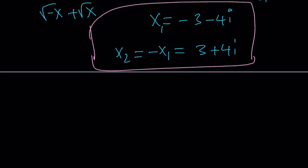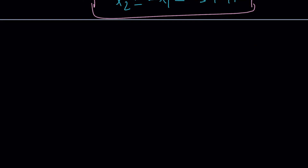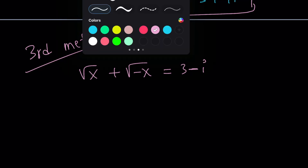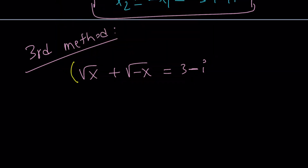Now we're going to go with the third method, because we did the second method first, third is next, and first will be last — and first method will be incomplete. The original problem: square root of x plus square root of negative x equals 3 minus i. A lot of people are going to go with this approach: square both sides. If you have radicals, squaring both sides usually works.